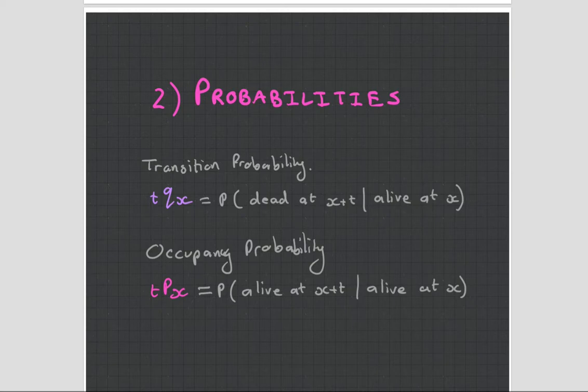Essentially, there are two types of probabilities within Markov models. You have the transitional probability—this is the probability that I'm in one state and I move into another state. So in our example, tqx represents that if I'm alive at time x, this is the probability that I'm dead at time x plus t, given that I was alive at time x. So transitional probability means I'm leaving that state to go to another state. Or there is the probability that I don't die, that I stay alive. And this is known as occupancy probability, tpx. And this is the probability that I'm alive at x plus t, given that I was alive at x.